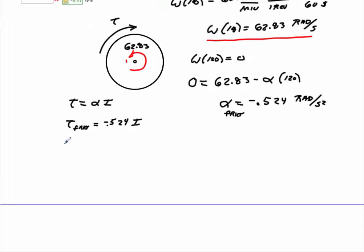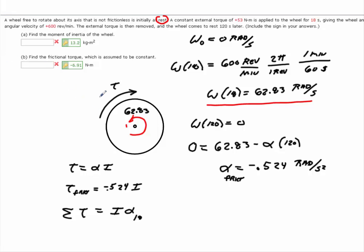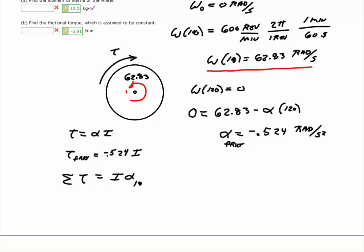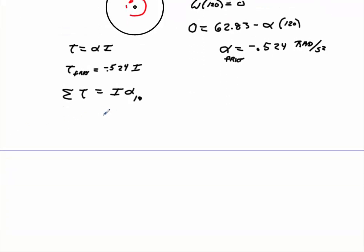All right. We also know that the summation of all torques must equal I times angular acceleration. Now we're going to apply this angular acceleration for the first 18 seconds because the frictional torque is always being applied, but we also apply a 53 newton-meter torque. So we can say that minus 0.524 times I, which is the frictional torque, plus the 53 that's being applied, must equal I times the angular acceleration that's being applied for the first 18 seconds.